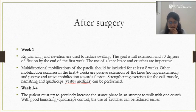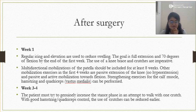For week one, regular ice and elevation are applied to reduce swelling. The goal is to achieve full extension and 70 degrees of knee flexion by the end of the first week. Knee braces and crutches are imperative. Multidirectional patella mobilization is done for at least 8 weeks. Other mobilization exercises in the first 4 weeks include passive extension of the knee and active mobilization toward flexion. Strengthening exercises for the calf muscles, hamstrings, and vastus medialis are performed. VMO (vastus medialis oblique) exercise is very important as it is the first muscle to go for wasting. It holds the patella in proper position and avoids maltracking laterally. SLR with external rotation is performed to strengthen the VMO.